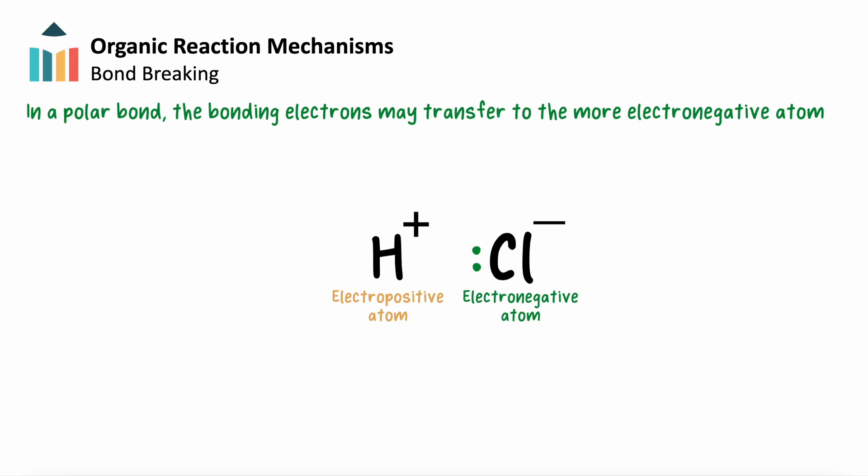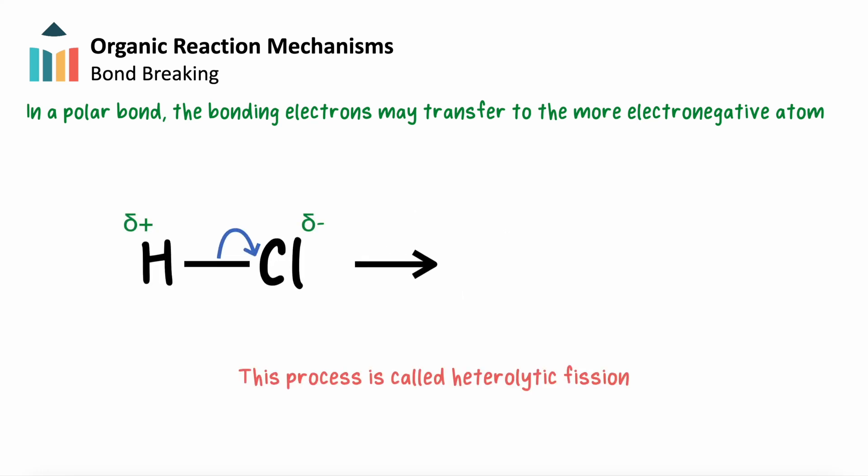This process is called heterolysis, or heterolytic fission, and is indicated by a full, curly arrow drawn from the bond to the more electronegative atom. For now, we'll focus more on homolytic fission and the subsequent reactions that occur with the radicals that are formed.